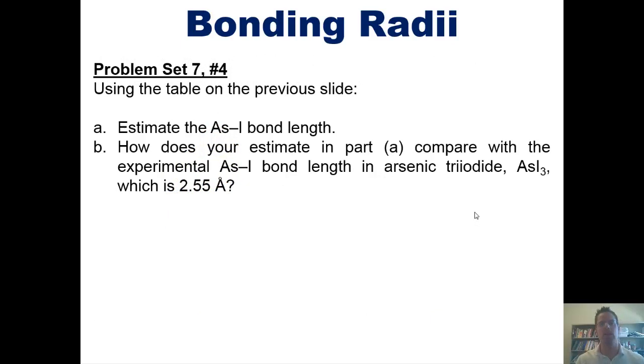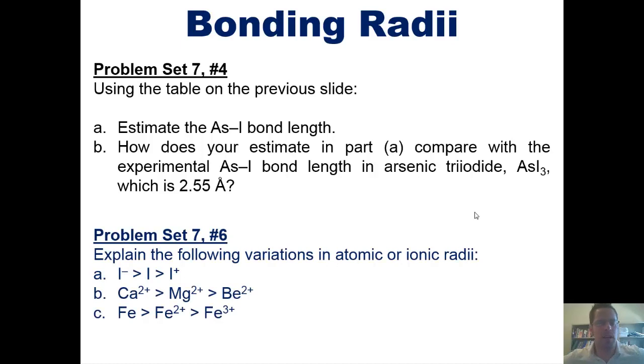That takes us to some problems. Using the table that I just showed, you estimate the arsenic-iodine bond length. Then, see how well your estimate compares to experimental bond length for arsenic triiodide, AsI3, which happens to be 2.55 angstroms. Next, explain the following variations in atomic or ionic radii. Now, I invite you to do this on your own first. If you'd like, I'm going to post a link here to a separate video in which I will show you the answers. That takes us to the end of this lecture.